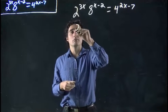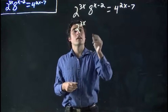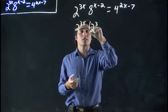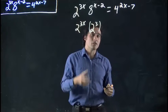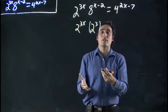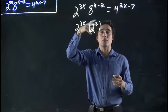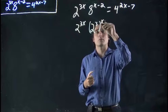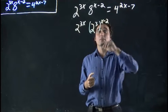So 2 stays the same, 2 to the 3x. 8, I can rewrite it as 2 to the 3. Remember, I'm allowed to do this because I'm not actually changing anything. 2 to the power of 3 is, by definition, 8. I'm just changing how I wrote it. I'm writing it in a more convenient way for this problem.